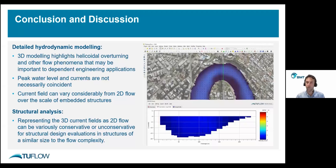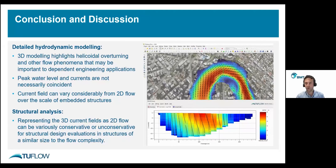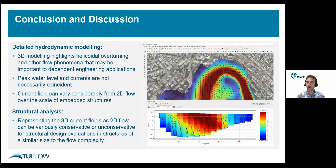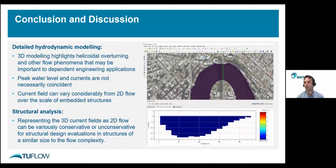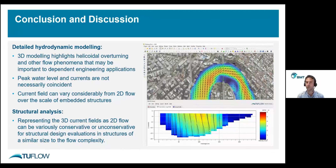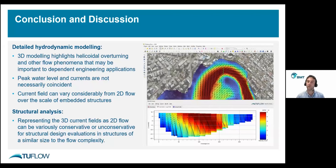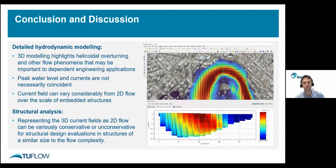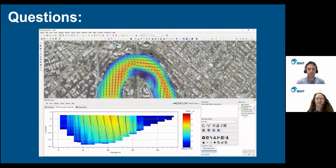To conclude, the main points of the presentation are: 3D modelling highlights helicoidal overturning and other flow phenomena that may be important to dependent engineering applications; the current field can vary considerably from 2D flow over the scale of embedded structures; and it is also worth noting that peak water levels and currents are not necessarily coincident. In terms of consequences for structural analysis and design, representing 3D current fields as 2D flow can be variously conservative or unconservative for structural design evaluations in structures of a similar size to the flow complexity.